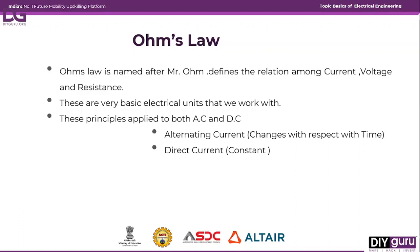Ohm's Law is applied to both alternating current and direct current. Alternating current (AC) changes with respect to time, whereas direct current (DC) is fixed or constant throughout the time period — it will not change with respect to time. This is the basic difference between AC and DC. For now, just remember AC changes with time and DC is fixed.